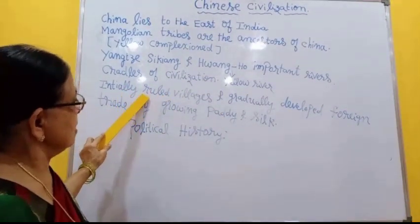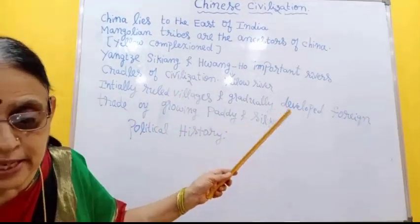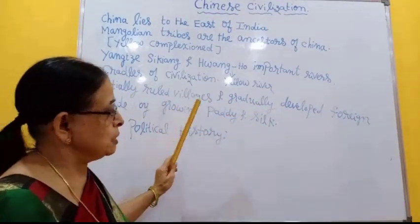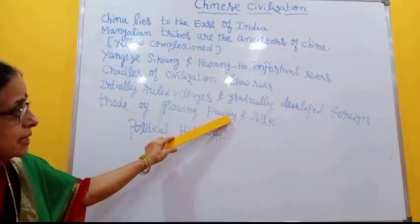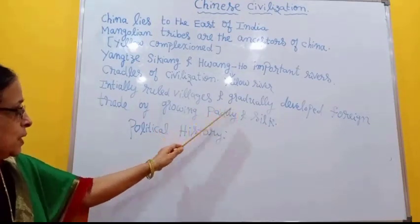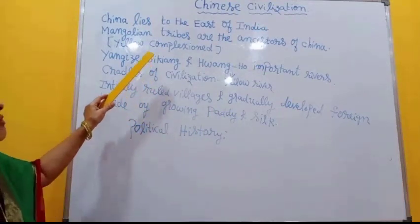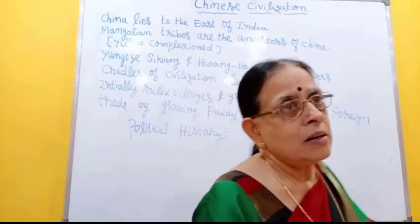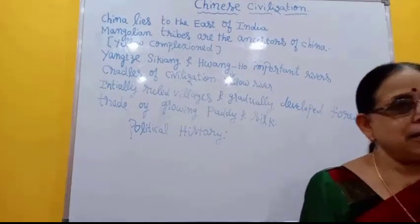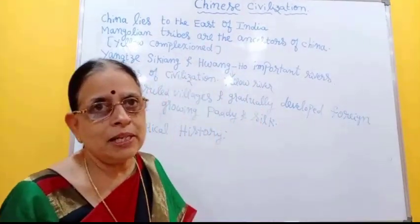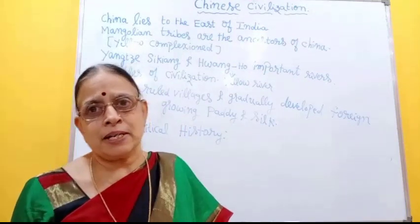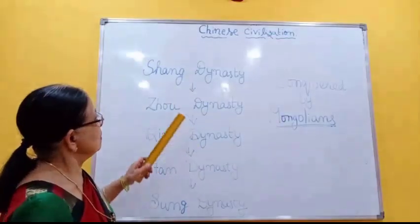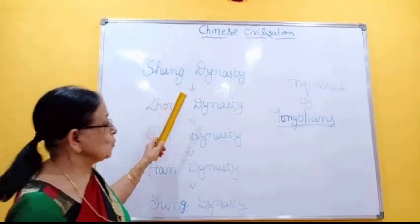Initially, the Chinese had early dynasties or kingdoms. They built ruined villages and gradually developed foreign trade by growing paddy and silk. Their agriculture flourished during this period. After knowing about the origin of Chinese civilization, let us move on to the political history — which dynasties ruled ancient China. Five dynasties ruled ancient China.